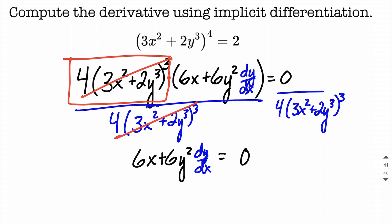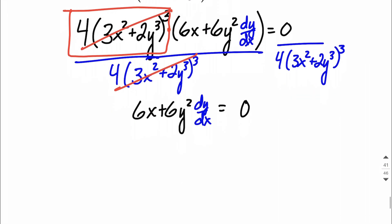That makes this a much easier equation to solve down. The next step I would do is go ahead and move that 6x to the other side by subtracting it. 6x minus 6x makes 0x's. We'll still have 6y squared times dy dx on the left-hand side. And on the right-hand side, now we end up with negative 6x.